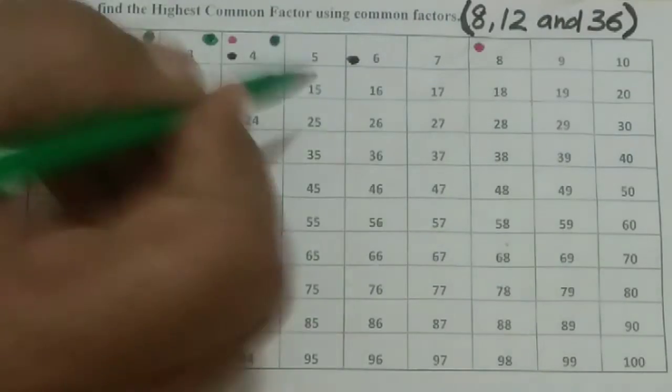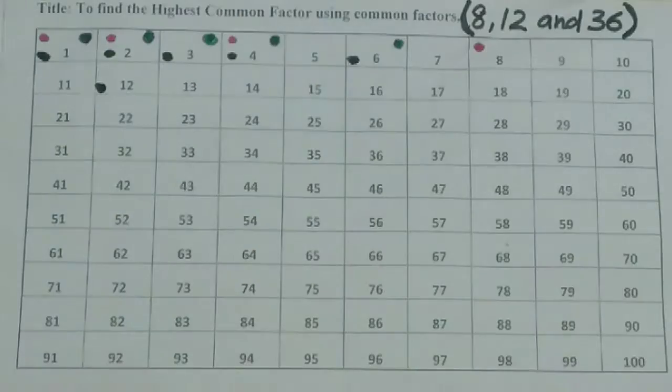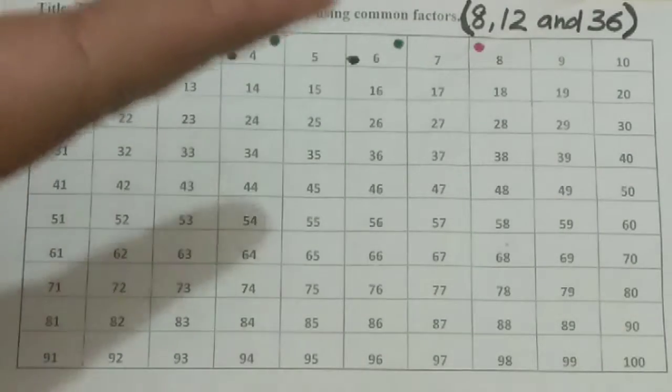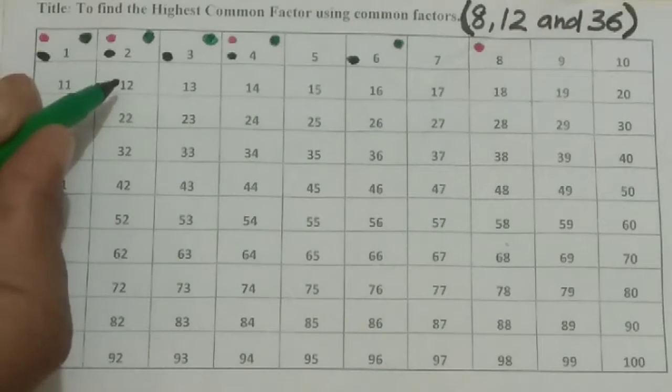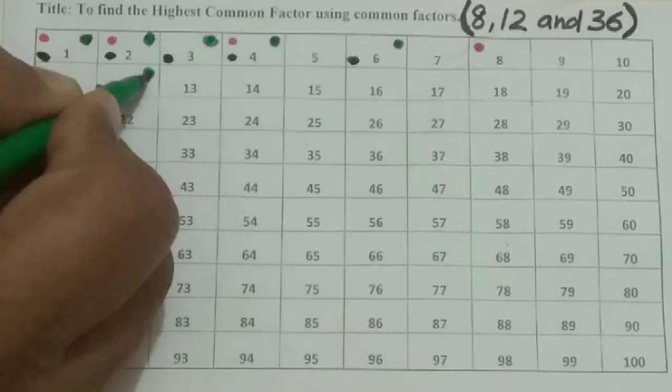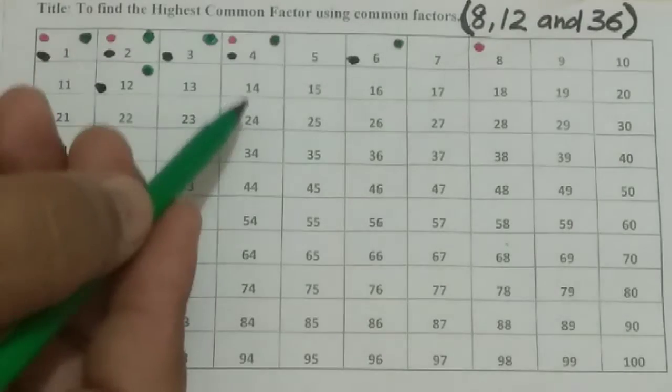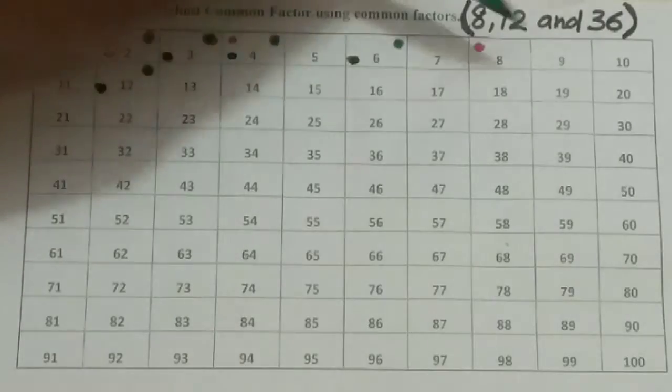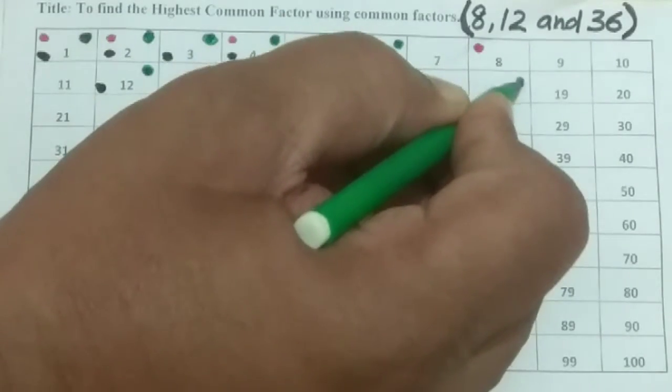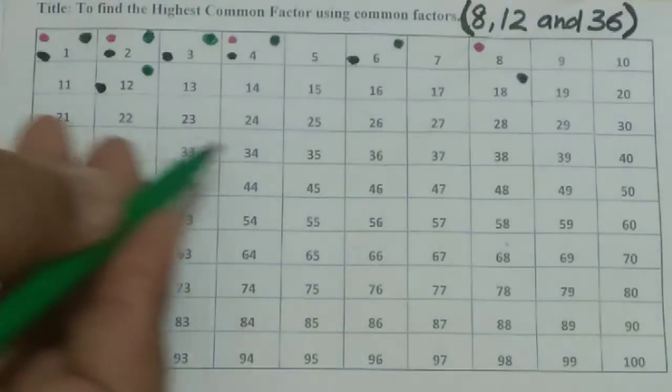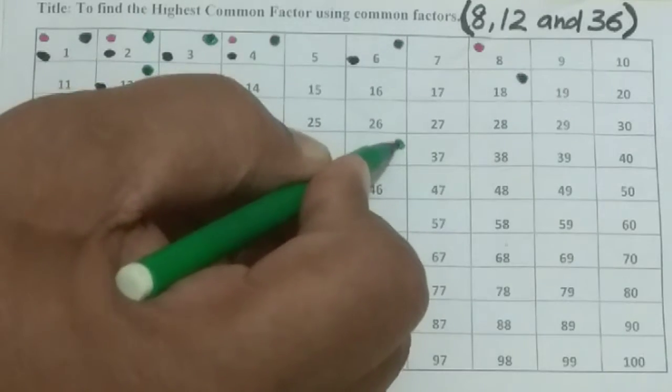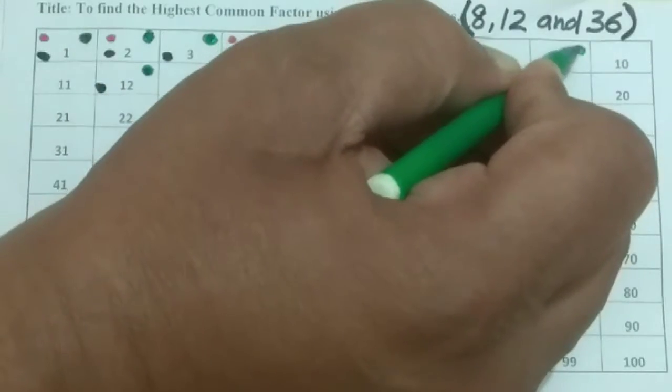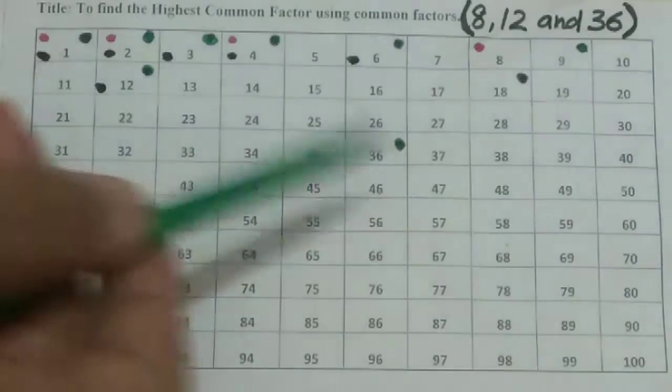Then 5 no. 6 yes, 6 times 6 are 36. Then 7 no, 8 no, 9, then 10 no, 11 no, 12 yes, 12 times 3 are 36. Then 13 no, 14 no, so it's going like this. Then 18, 2 times 18 are 36. Then 19, 20, 21, 22 no. So here also 36, and here 9 also, so 9 times 4 are 36.